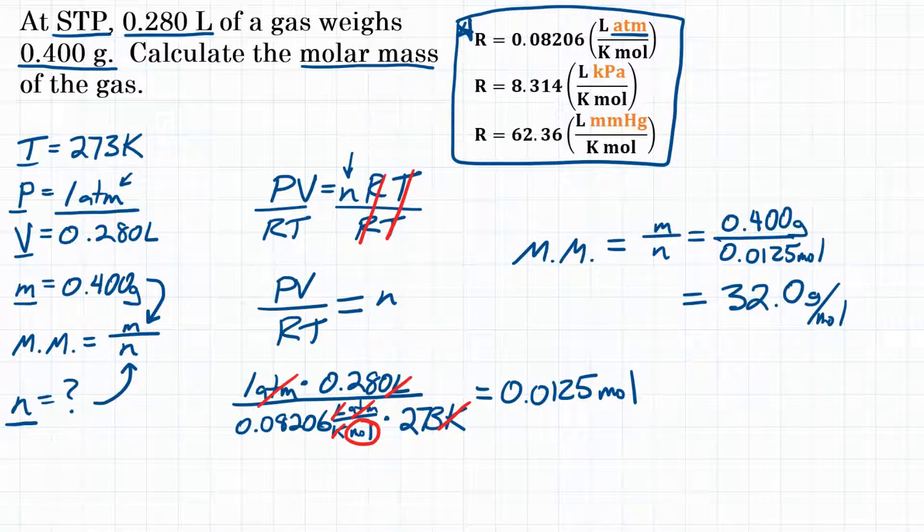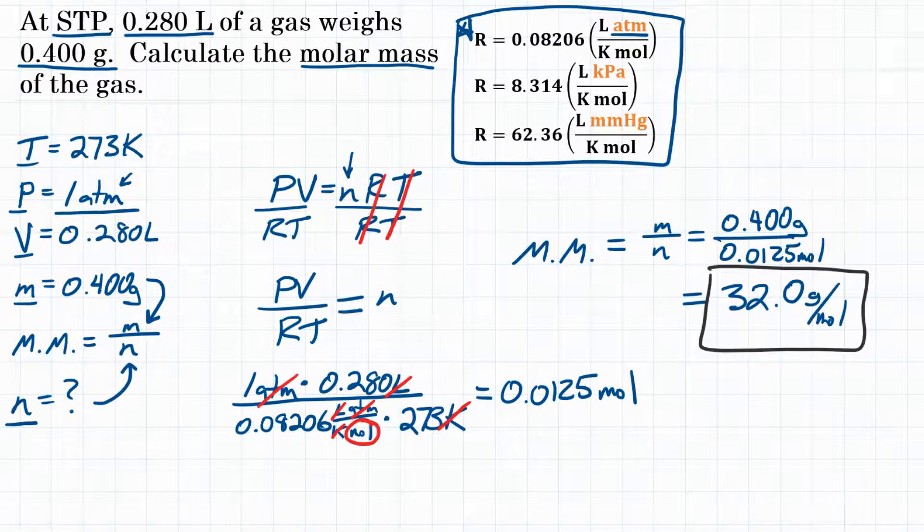Final answer: at STP, if you have 0.28 liters of gas weighing 0.4 grams, the molar mass would be 32.0 grams per mole.